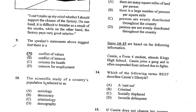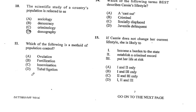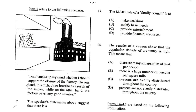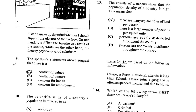Numbers 10 and 11 relate to population study, which is no longer in the curriculum; however, let us go through them. Number 10. The scientific study of a country's population is referred to as D, demography. Number 11. Which of the following is a method of population control? That will be D, tubal ligation. Number 12. The main role of a family council is to A, make decisions. Number 13, also relating to population control: the results of a census show that the population density of a country is high. This means B, there is a large number of persons per square mile.